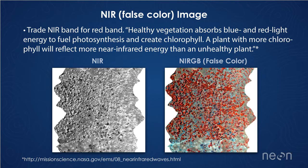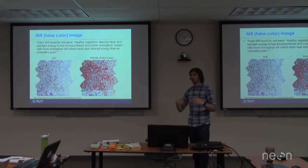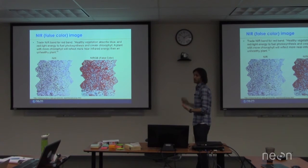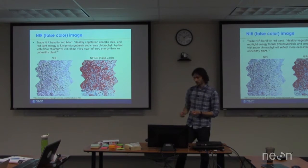As you can see that quote on the top, healthy vegetation absorbs blue and red light energy to fuel photosynthesis, so a plant with more chlorophyll is going to reflect near-infrared energy. So this is really useful information to us. It's one of the reasons we don't want to just stick to those RGB bands. We want to look in those other portions of the spectrum to get additional information.